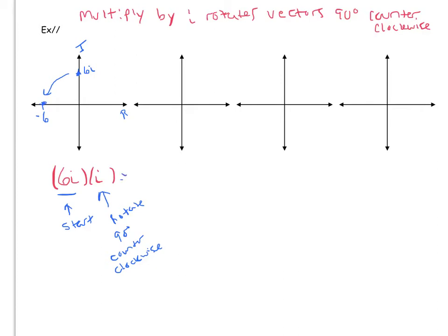And of course we know that that is what exactly we get when we do the multiplication out algebraically, because we get 6 times i times i, and i squared is negative 1. So it's 6 times negative 1, which is negative 6.